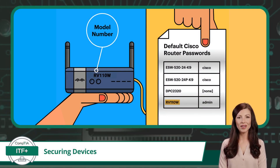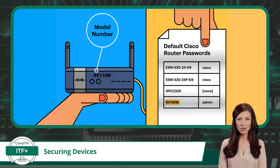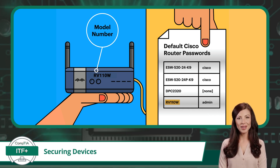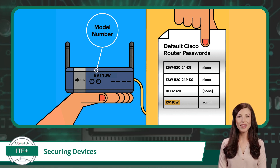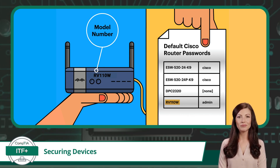Another important part of securing your devices includes enabling password authentication and changing default passwords when applicable. Enabling passwords on mobile devices, workstations, network devices, and servers is a fundamental step in safeguarding personal and professional data. Passwords act as the first line of defense against unauthorized access, ensuring that only those with the correct credentials can access the device's contents. When devices come with default passwords, they often follow predictable patterns known to many, including potential attackers. These default passwords are akin to leaving your front door unlocked with a sign saying, come on in. By not changing the default password or neglecting to set one altogether, users risk exposing sensitive information to theft, misuse, or cyber attacks. So set up a strong, unique password to keep the digital gate crashers out.